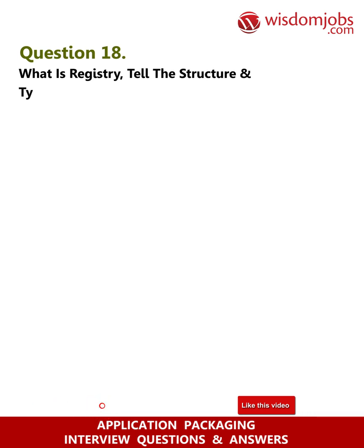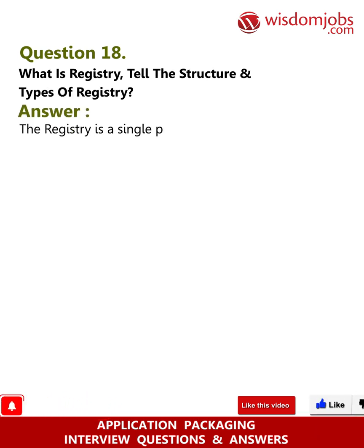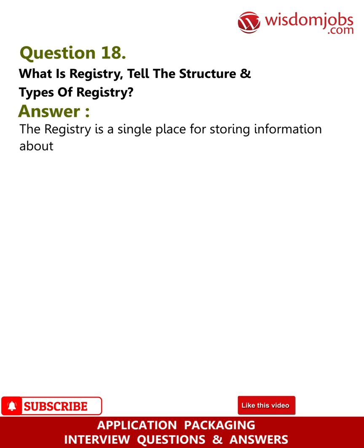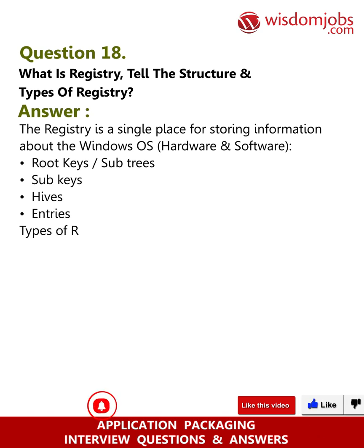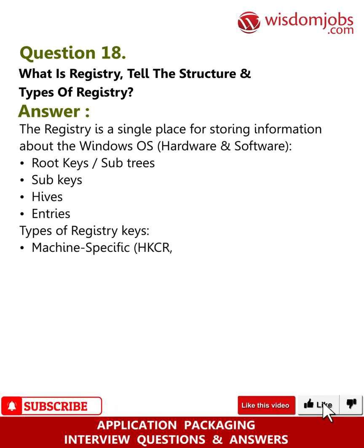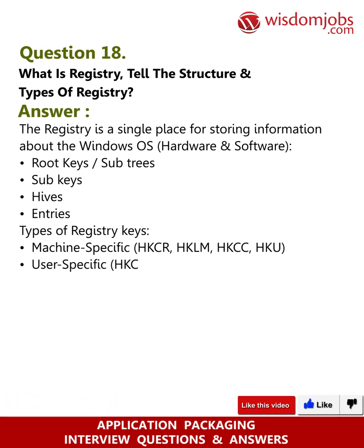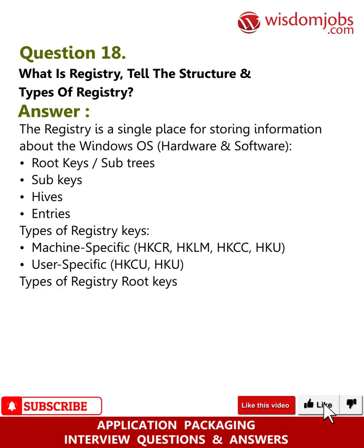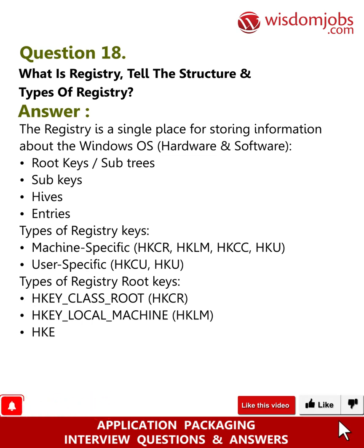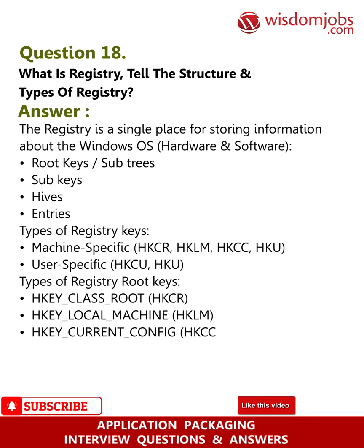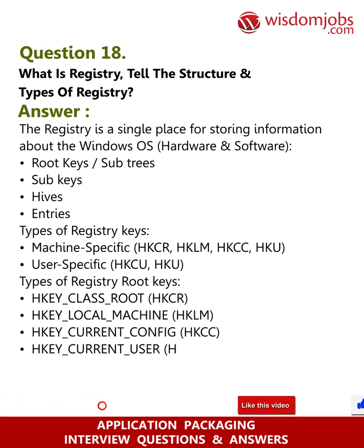Question 18: What is the registry? Tell the structure and types of registry. Answer: The registry is a single place for storing information about the Windows OS, hardware, and software. Structure includes root keys, sub-trees, sub-keys, hives, and entries. Machine-specific keys: HKCR, HKLM, HKCC, HKU. User-specific keys: HKCU, HKU. Types of registry root keys: HK_CLASS_ROOT (HKCR), HK_LOCAL_MACHINE (HKLM), HK_CURRENT_CONFIG (HKCC), HK_CURRENT_USER (HKCU), HK_USERS (HKU).